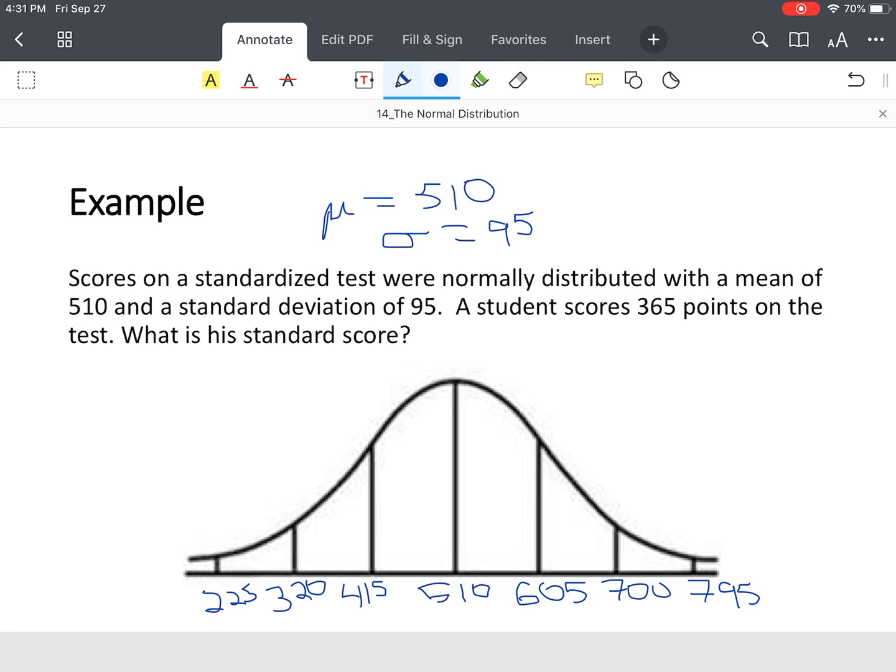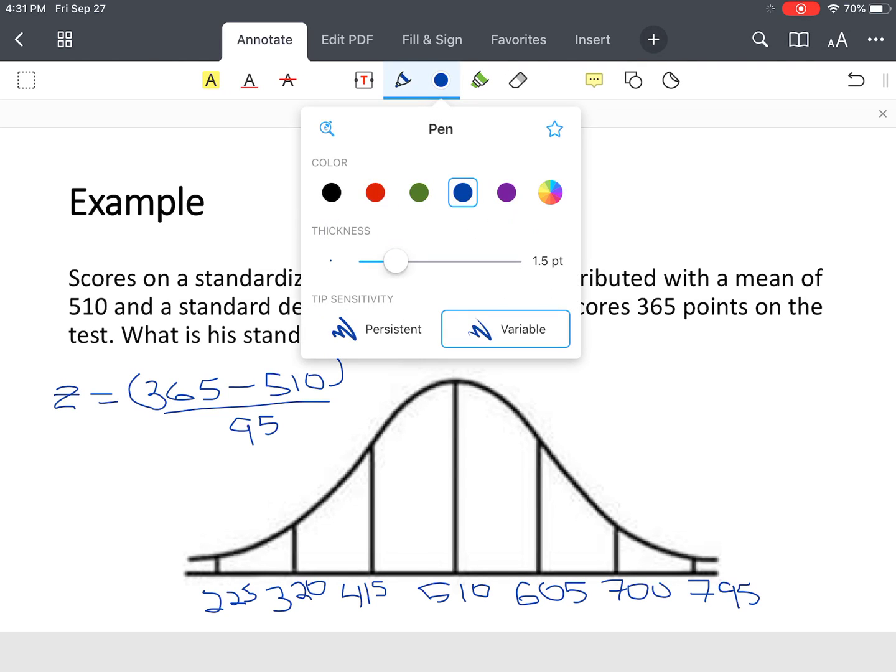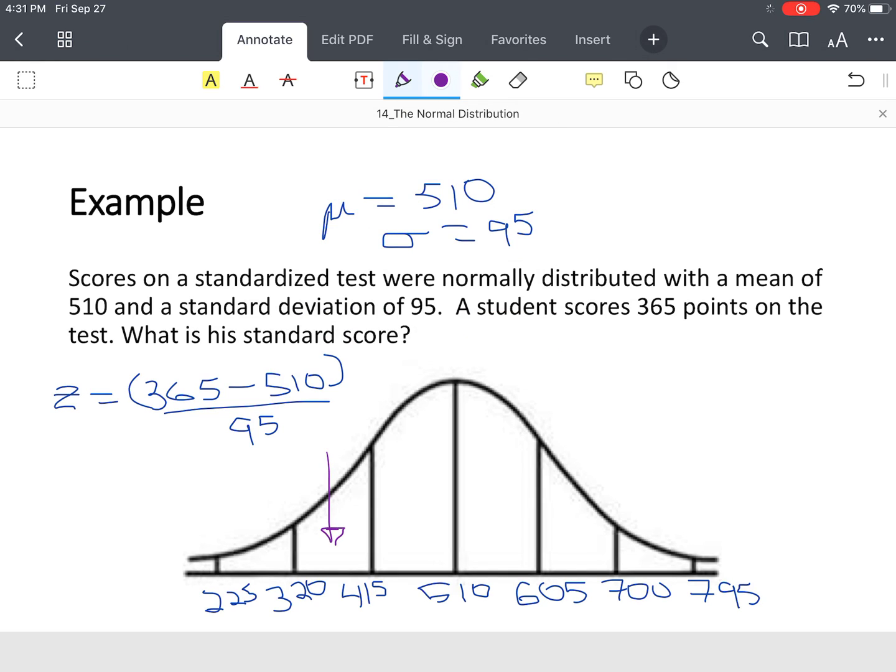To find the standard score, z equals the data value 365 minus the mean 510, divided by the standard deviation 95. Before I even begin, I can plot that 365 is somewhere in here. So I know it's to the left. My z-score should be negative because if 510 is my mean, 365 is to the left, so the z-score is negative. Remember, that's to the left or below the mean.